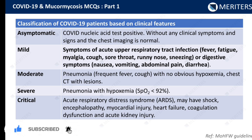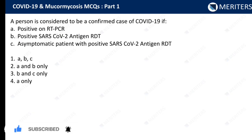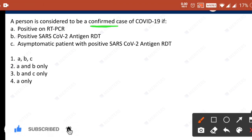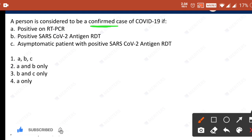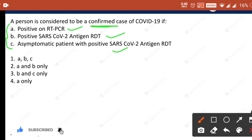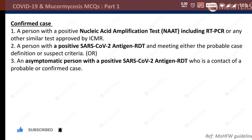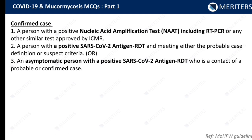A person is considered to be a confirmed case of COVID-19 — this is a very tricky part. There are specific guidelines to categorize COVID-19 cases as confirmed or suspected. When you call a case a confirmed case of COVID-19: the patient is positive on RT-PCR, positive SARS-CoV-2 antigen, or is an asymptomatic patient with positive SARS-CoV-2 antigen. These are the guidelines for confirmed cases according to the Ministry of Health and Family Welfare. Please note it down.